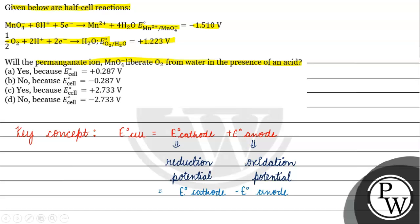These two are reduction potentials — two different values. Now we have oxidation potentials, and when we convert to reduction potentials they are additive inverses. So my question involves the oxidation potential of Mn and the reduction potential of the oxygen atom.